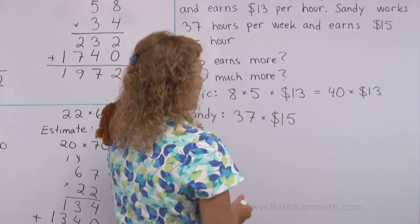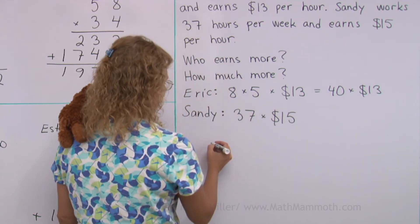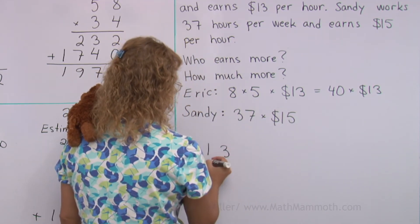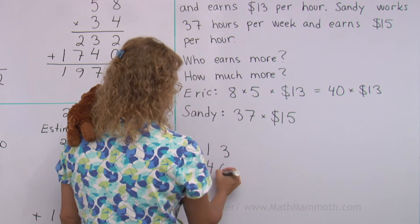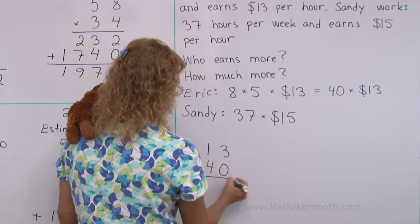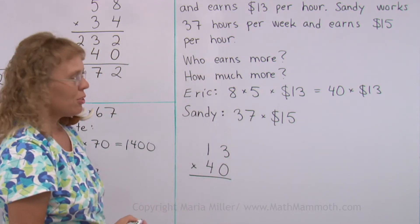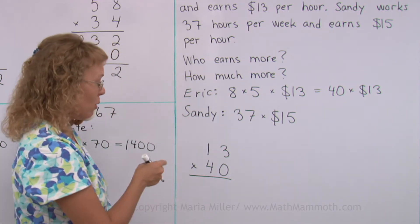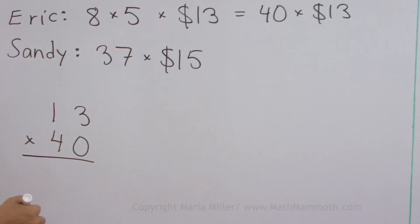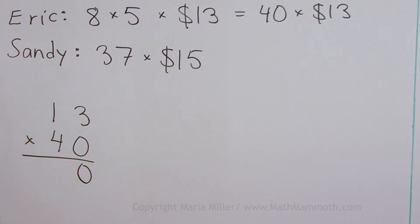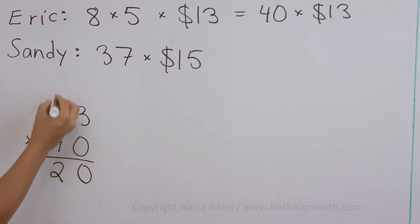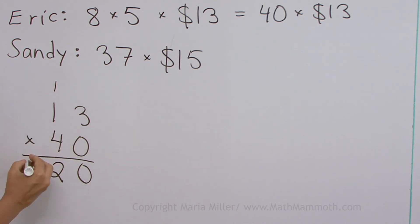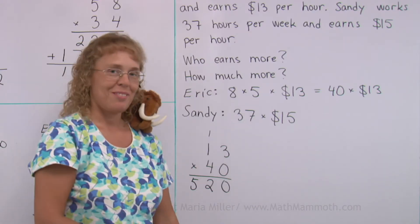Okay, and now we just go to the multiplication work. Eric: we have 13 times 40. If you remember the previous lesson, when we multiplied by whole tenths, this is that kind, so I have a shortcut. I put a zero here in the beginning, then I just go 4 times 3, then 4 times 1 plus 1, and I'm done.